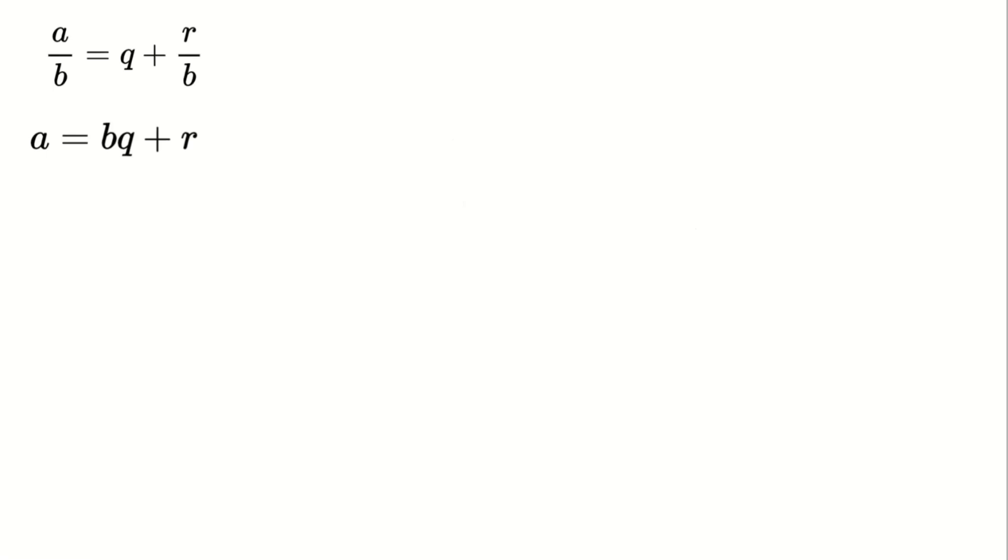Now let's simplify this by introducing a new notation. We'll represent the remainder as R(a, b) = r. Using this notation, Euclidean division becomes a = bq + R(a, b).